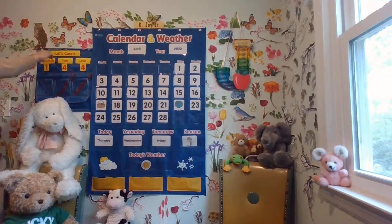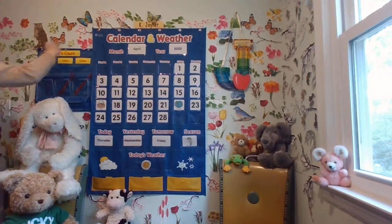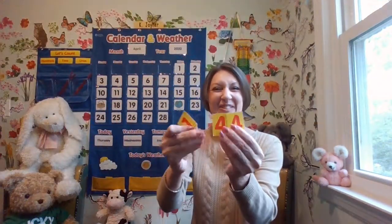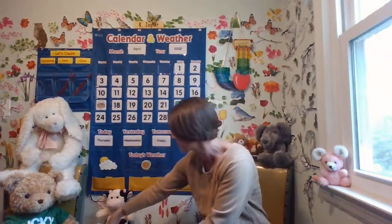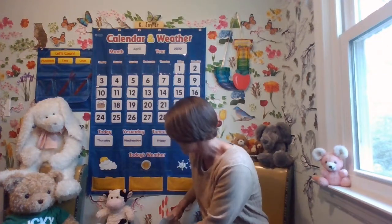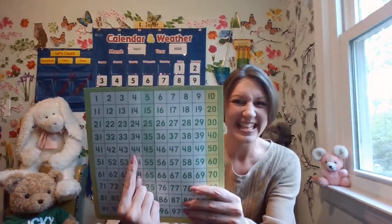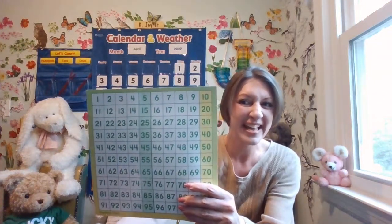Let's figure out how many days we've been in school. What number comes after 144? Do you know? Think when you're counting — 144, 145. I heard some of you say it. Let's check our hundreds chart as a resource. Here's the 44, and the number after is 45.